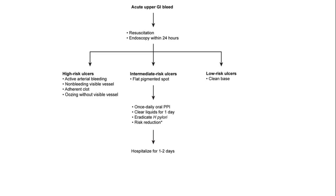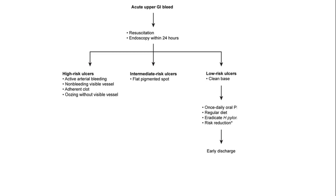Patients with intermediate-risk ulcers, identified by a flat pigmented spot, are managed with once-daily oral PPI, clear liquids for one day, and H. pylori eradication if present. These patients should be hospitalized for one to two days. Patients with low-risk GI bleed ulcers with a clean base can often be discharged on daily PPI if able to tolerate a regular diet.